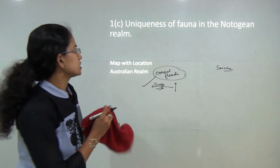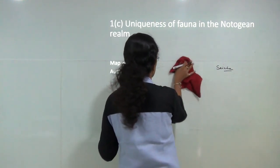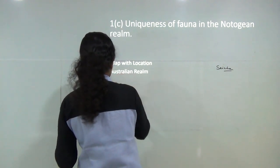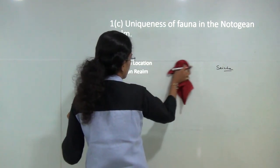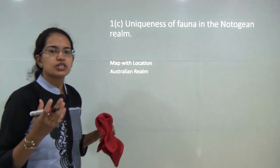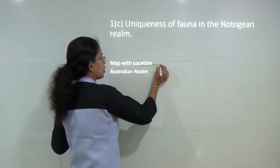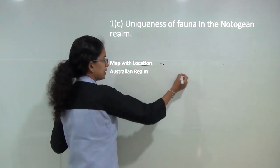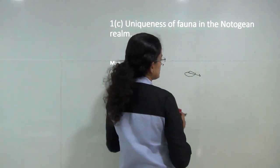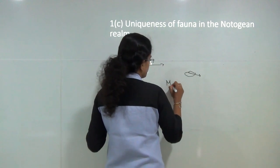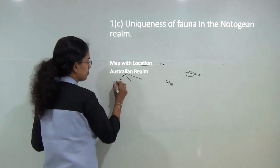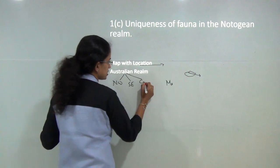The next question is the uniqueness of fauna in the case of the Notogean realm. A similar question was asked in 2012. Notogean refers to the Australian realm. You must draw a world map explaining the region of Australia, and explain that this realm is divided into three parts: north-west, south-east, and central.